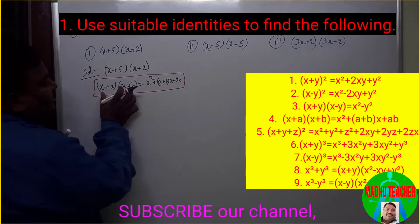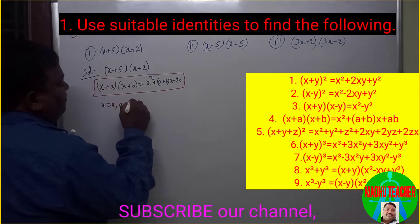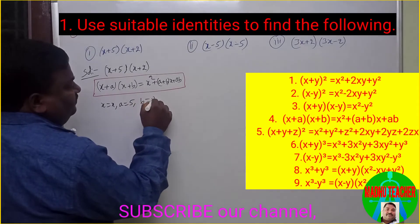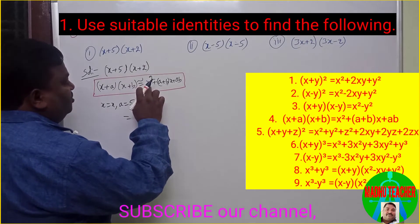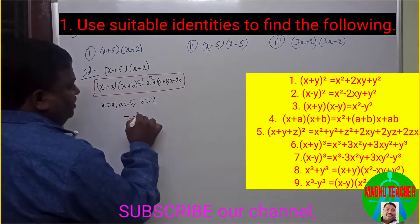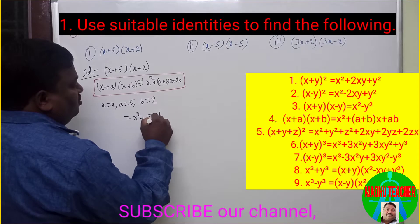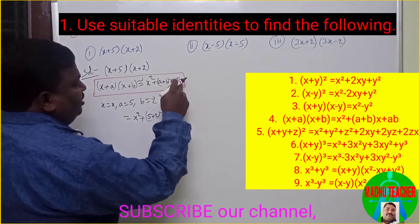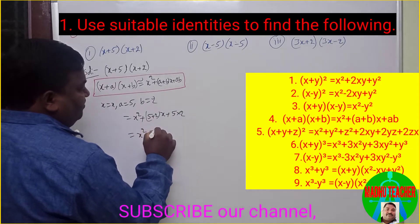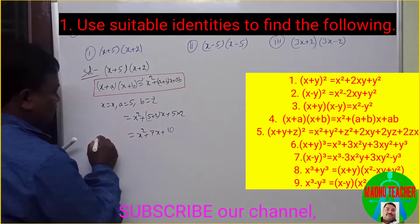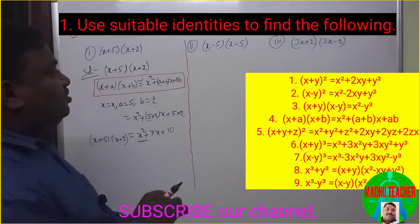Here, comparing the two expressions: x equals x, a equals 5, and b equals 2. So that equals x² + (a+b)x + ab, which is x² + (5+2)x + (5×2) = x² + 7x + 10. So this is (x+5)(x+2) = x² + 7x + 10.